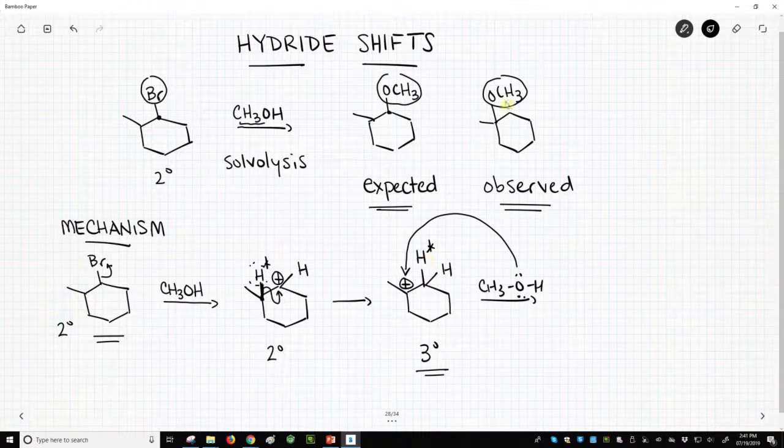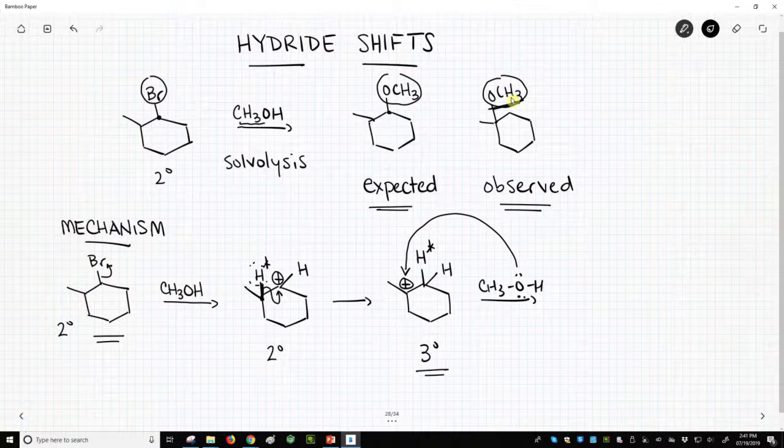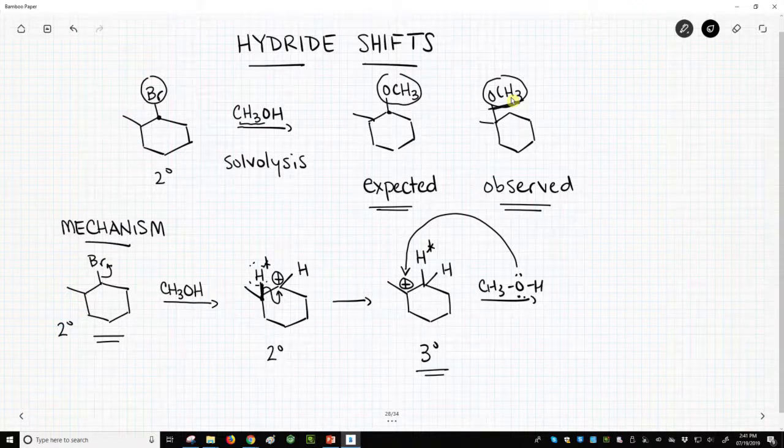And so that explains how we got our methoxy group on, apparently, the wrong carbon - the carbon we didn't expect. So this is a hydride shift. We can see them coming. It's fairly predictable. It's a very fast process.